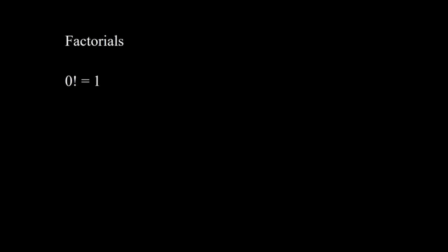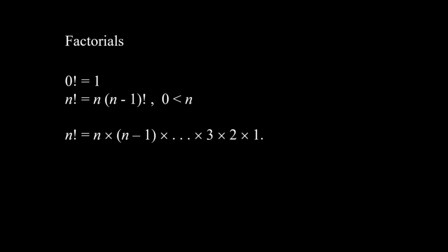First, we recall the operation factorials. 0 factorial is 1. Recursively, n factorial is defined as n times n minus 1 factorial, where 0 is less than n. In other words, n factorial is n times n minus 1, times n minus 2, and so on, times 3, times 2, times 1.